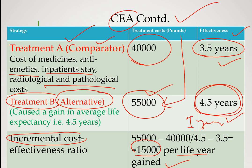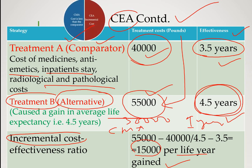If the alternative treatment were to cost less — say 30,000 pounds instead of 40,000 — then that situation would be called cost-minimizing analysis, not cost effectiveness analysis. This is a technical point to remember. In a particular set of therapy, you will either encounter cost effectiveness analysis or cost-minimizing analysis. I hope you now understand the importance of cost effectiveness analysis, particularly in hospital formulary decision making.